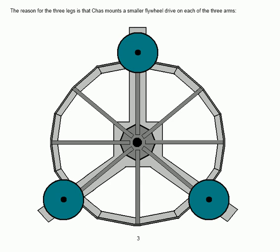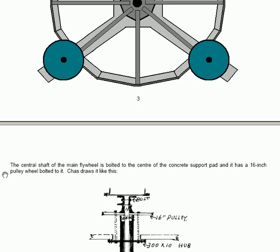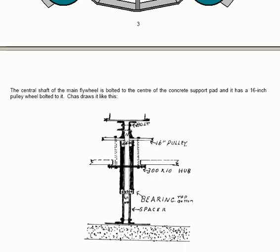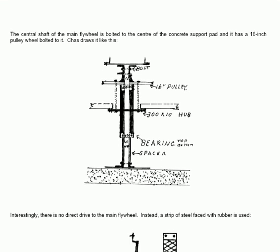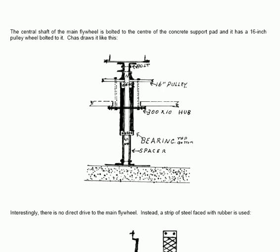The central shaft is bolted to the center of the concrete support pad and it has a 16 inch pulley wheel bolted to it as well. That is bolted to the flywheel, I should say. Chas draws it like this. He has the central shaft, the axle bearing bolted to a plate which is attached to the concrete slab. There are bolted plates here to hold the flywheel itself to a 16 inch pulley, and that then rotates around the entire shaft itself.